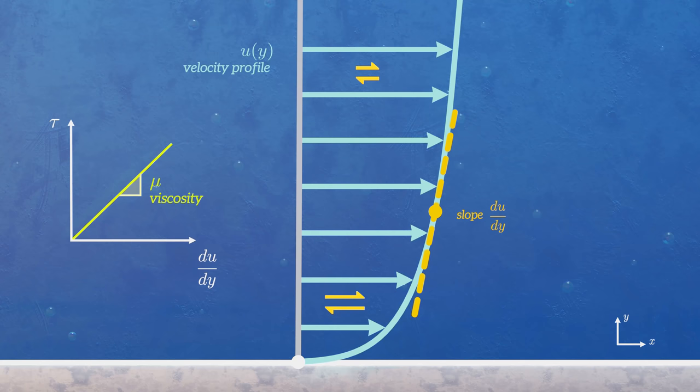We can think of viscosity as the internal friction of a fluid in motion. It has the effect of smoothing out differences in velocity by increasing the shear stresses in proportion with the velocity gradient.